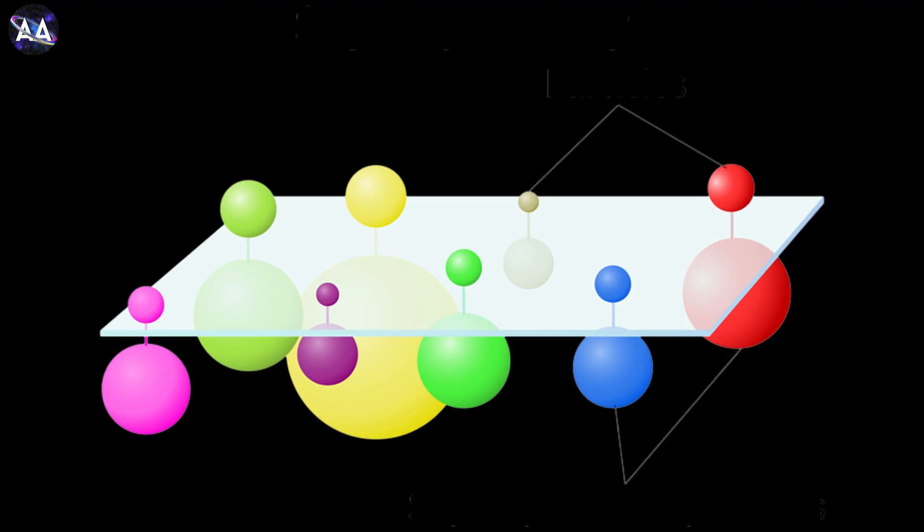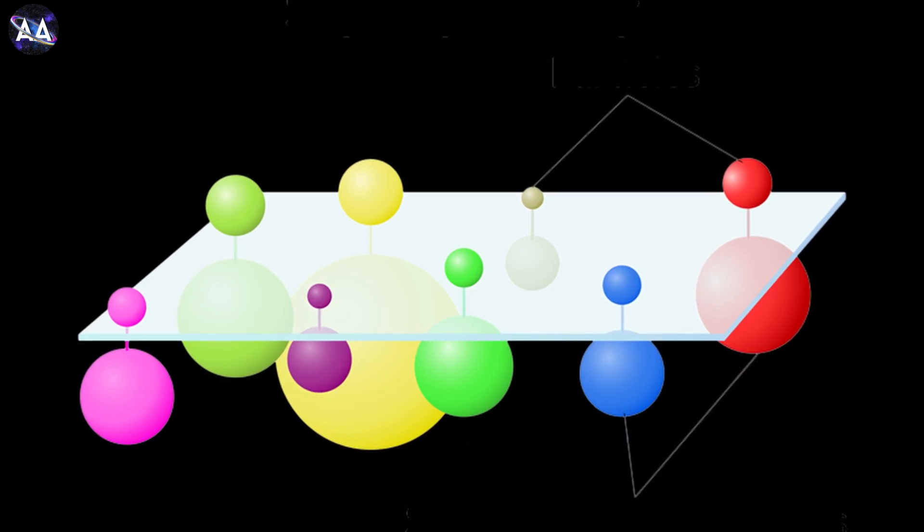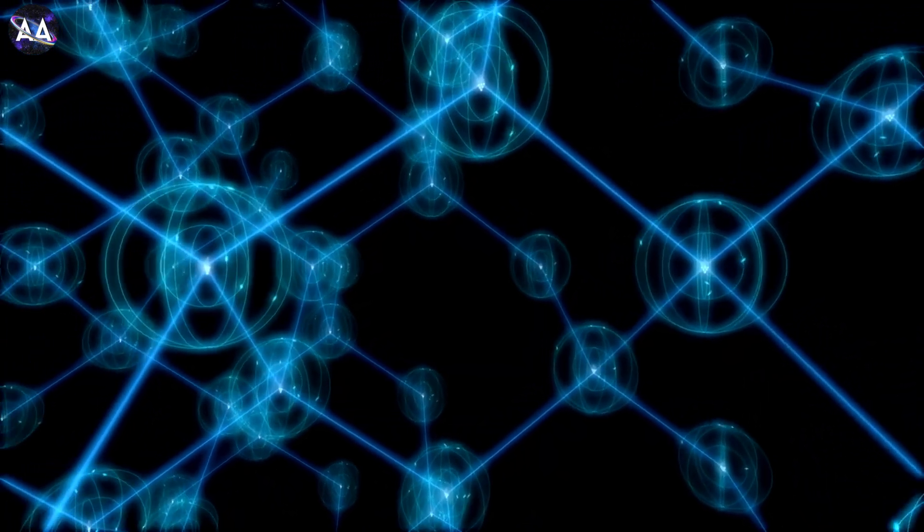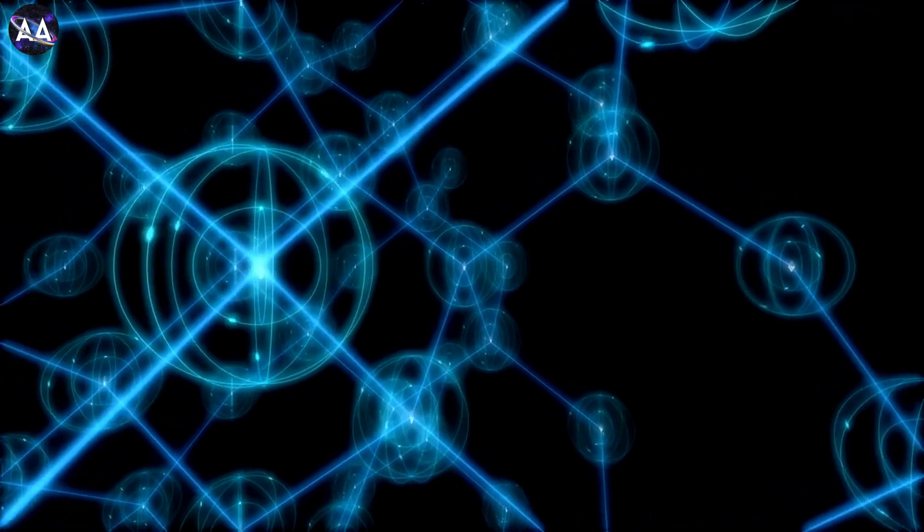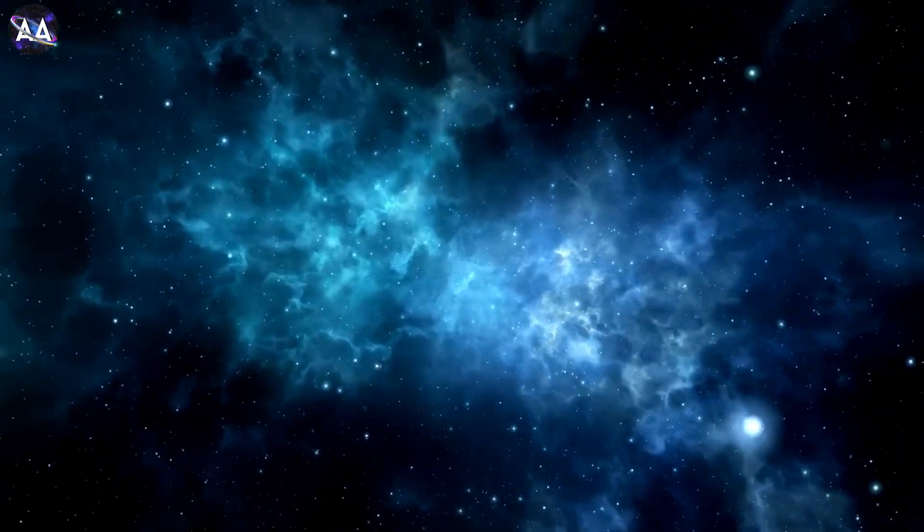To make M-theory work, physicists rely on the concept of supersymmetry. This theory predicts that every known particle has a heavier twin. These supersymmetric particles could also explain the mysterious dark matter that makes up most of the universe's mass.